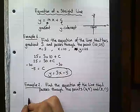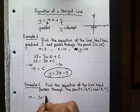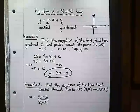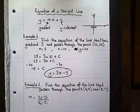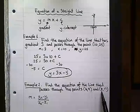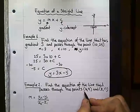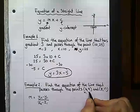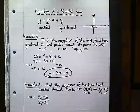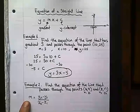Remember m equals y2 minus y1 over x2 minus x1. So I need to label these values: my x1 value, my x2 value, my y1 value, my y2 value. And then I substitute them into my calculation to find out my gradient.